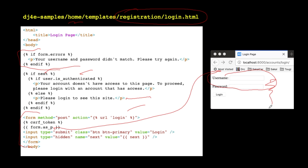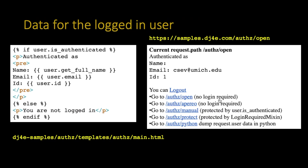We also have to pass the next value back as a hidden field. A hidden form field is just like a text field except it doesn't show up visually — if you view source you'd see it. After you submit the form, Django needs to know where to go next. So if you're successfully logged in, it's going to redirect to whatever that next value is. The view gives us the next value inside the template, but we have to give it back when we post to the view.